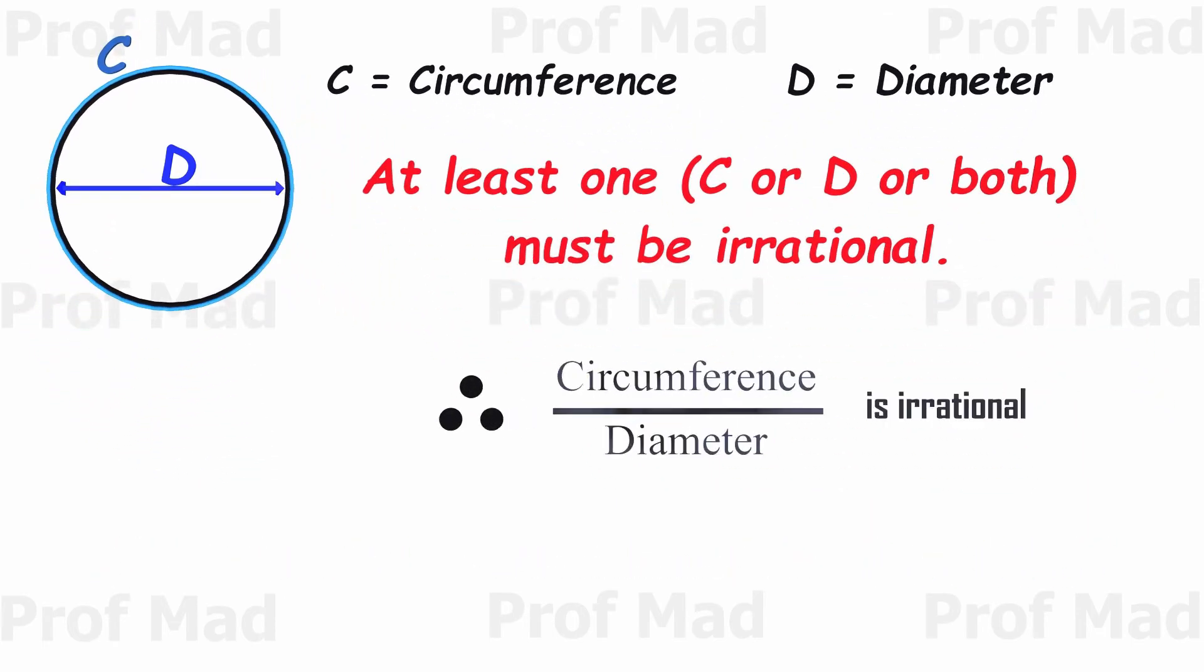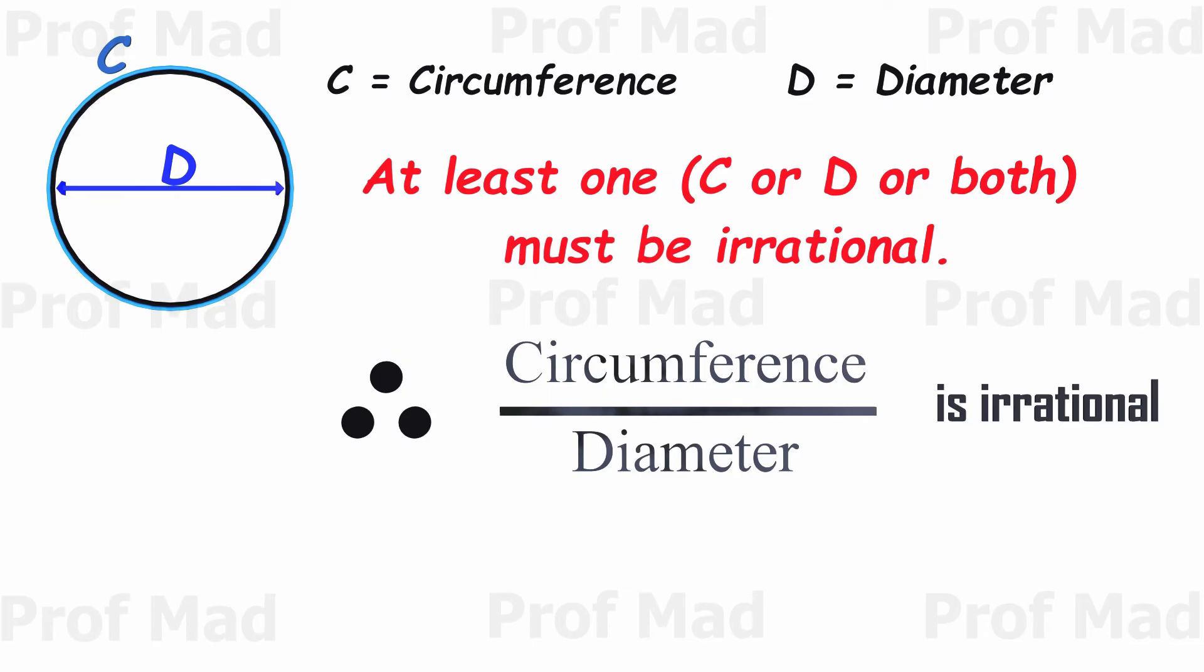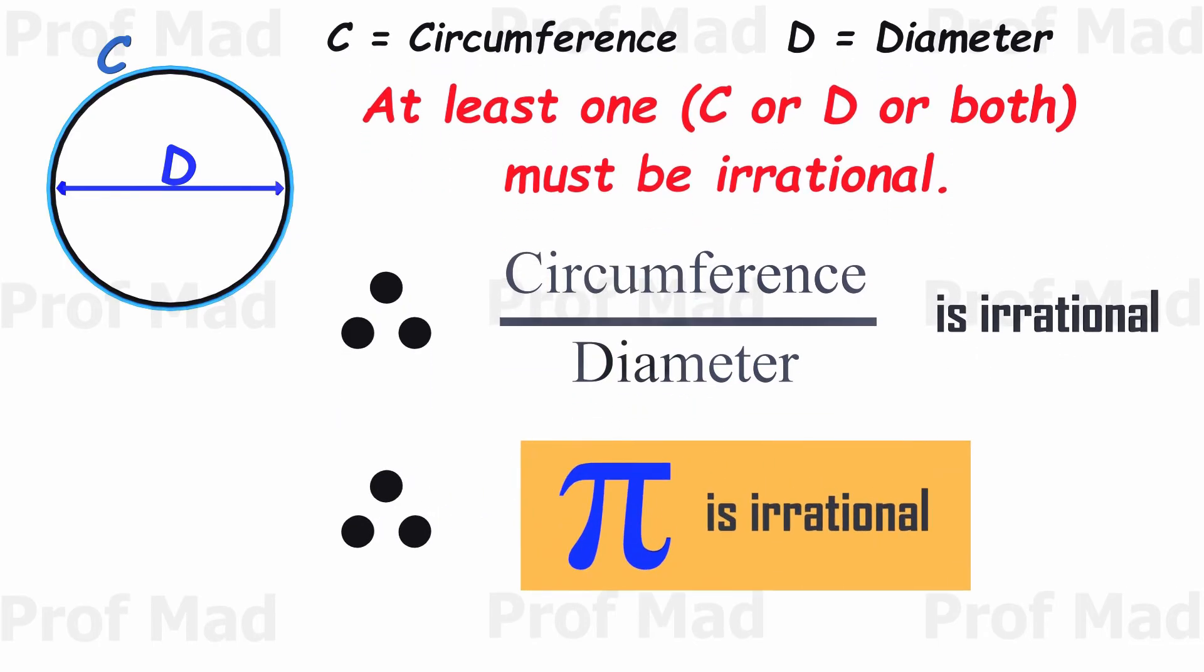When we divide an irrational number by a rational number, or vice versa, the result is always an irrational number. So because the ratio of circumference to diameter is an irrational number, pi itself is an irrational number.